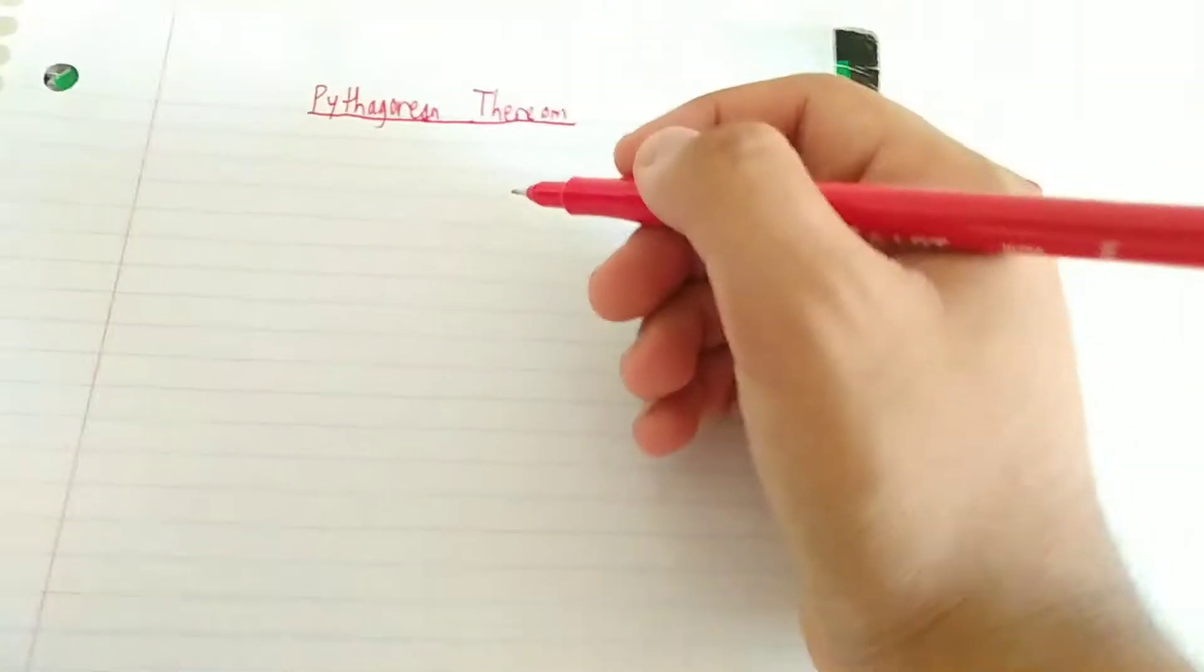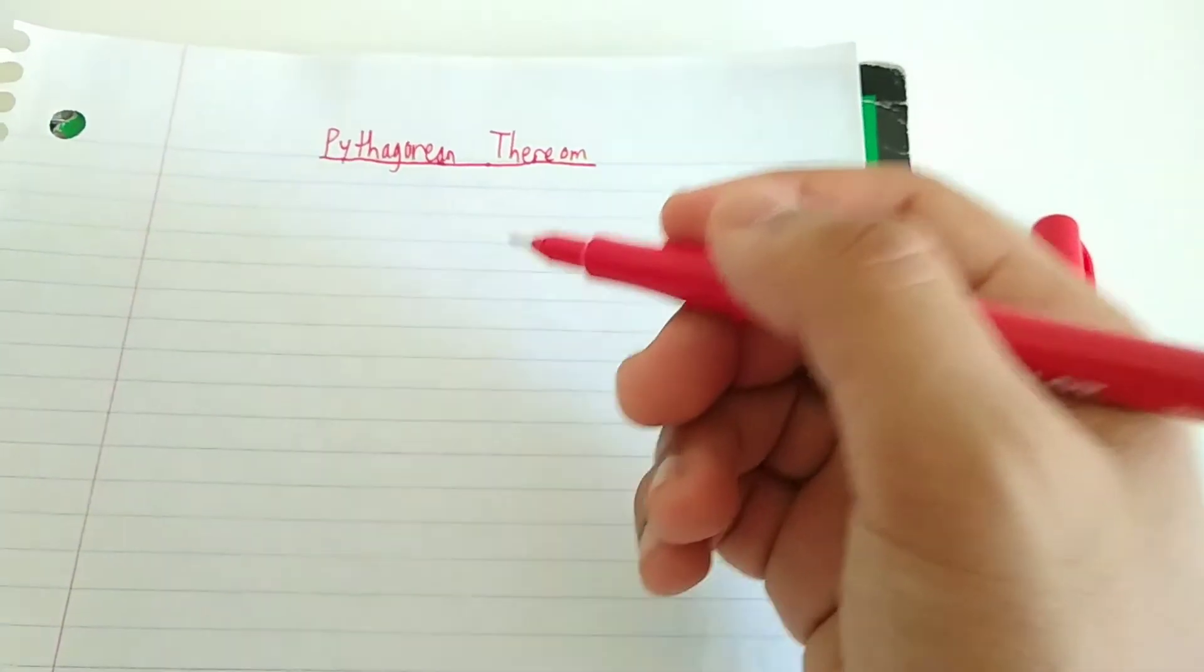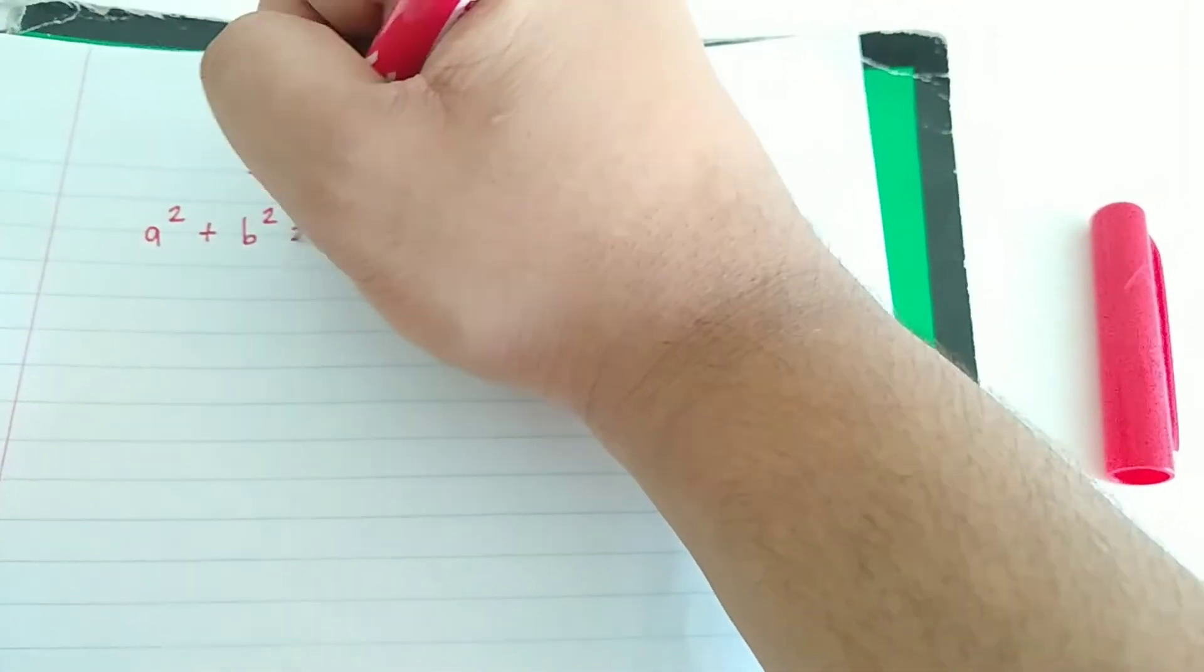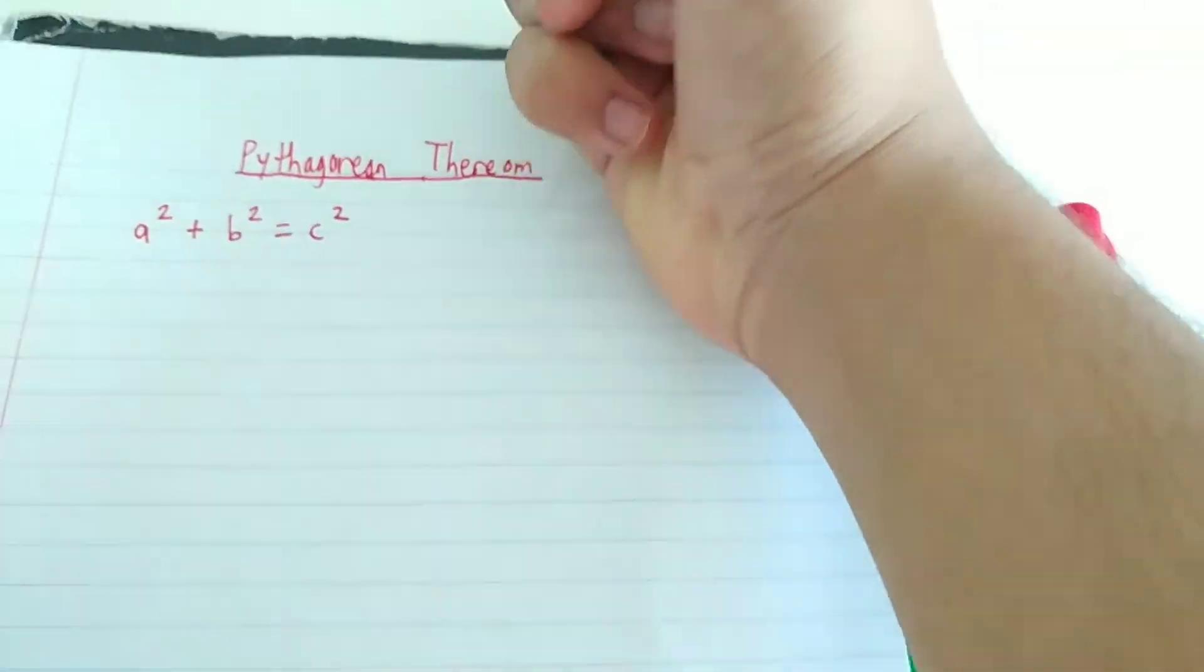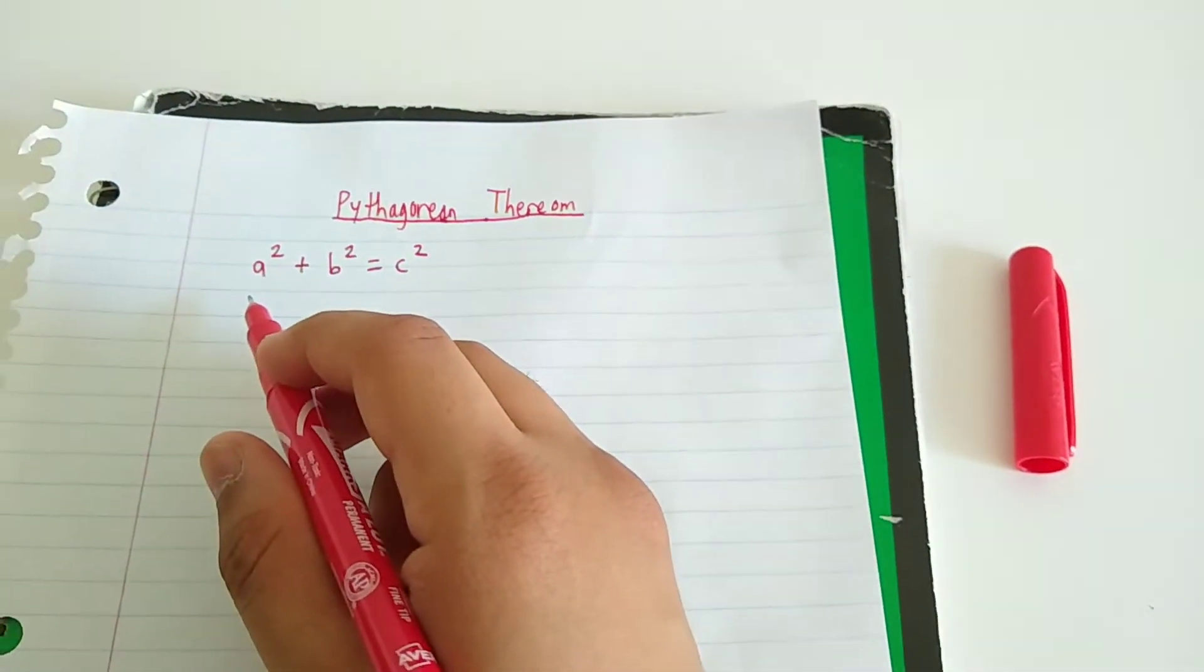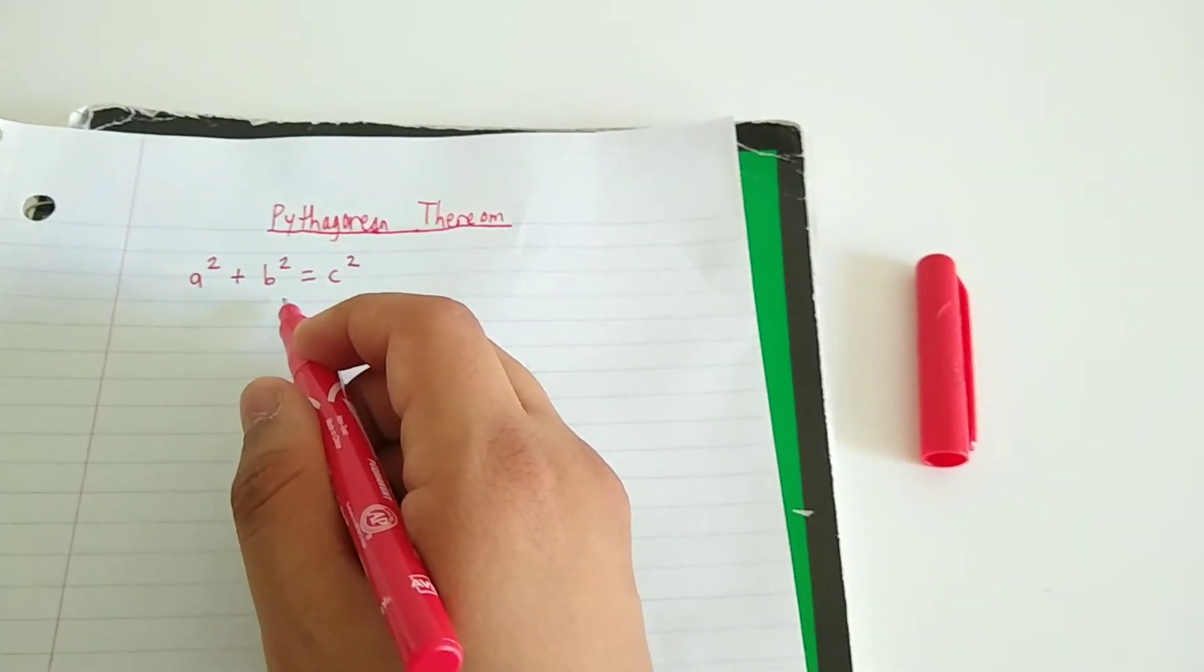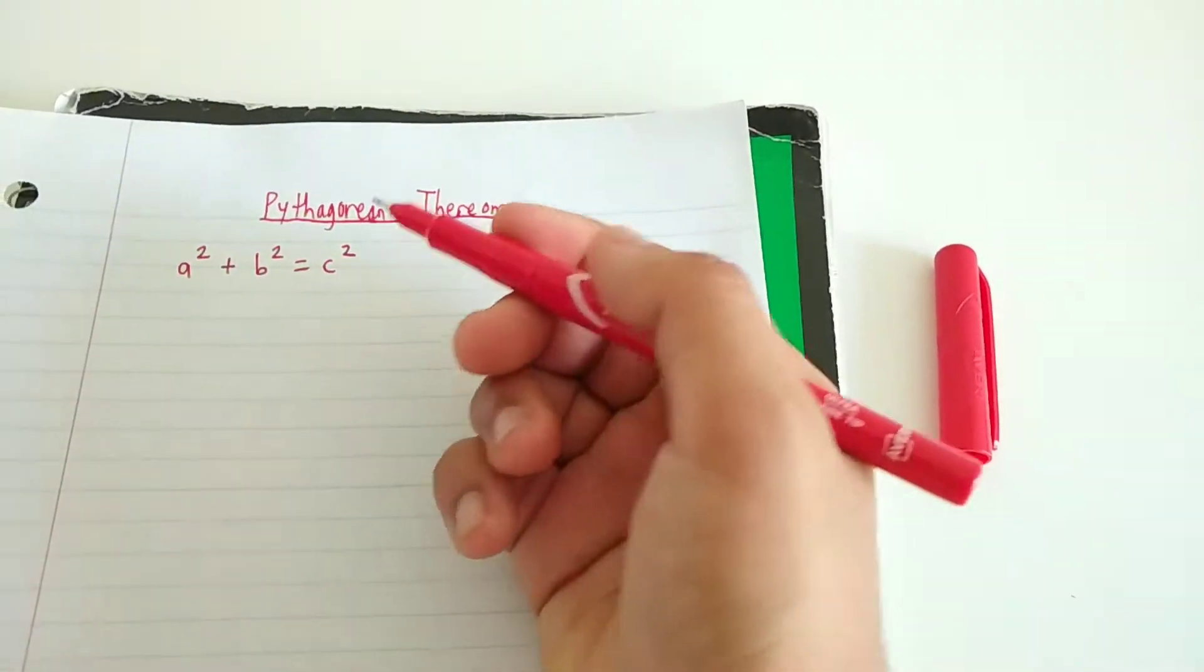So first off, what is the Pythagorean Theorem? Well, it's a theorem for a triangle that states that a squared plus b squared equals c squared. So a times itself plus b times itself equals c times itself.